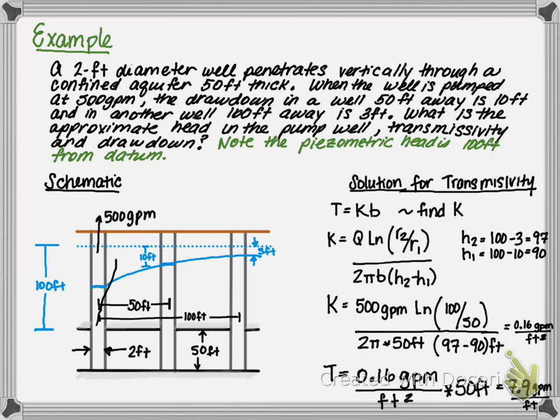Next, we'll plug in our values and determine that the hydraulic conductivity for this particular example is 0.16 gallons per minute per square feet, and the transmissivity is 7.9 gallons per minute per foot.